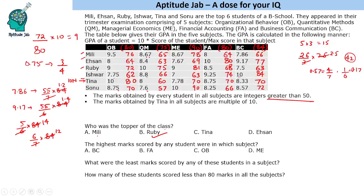This question could have been answered without calculating values — just by observing the GPA table. Ruby's GPAs are 9, 10, 9, 8.5, 7.5 — she has 10 in one subject and 9 in two others. Others have most GPAs around 8. Tina's values are 8, 7.78, 8.75 — no one else has 9 twice. So Ruby is clearly the topper.